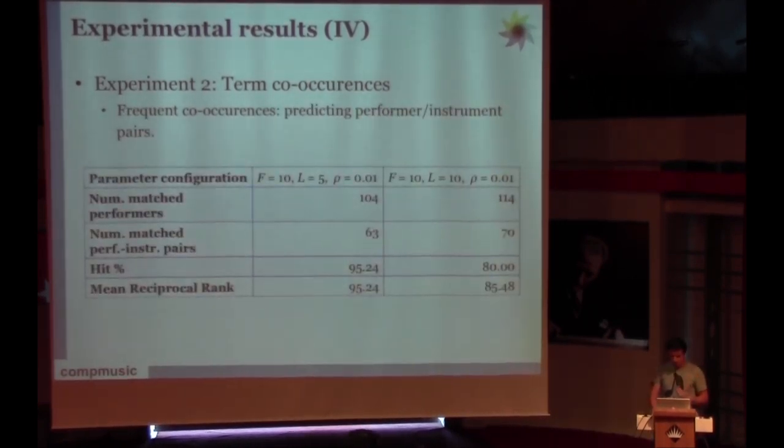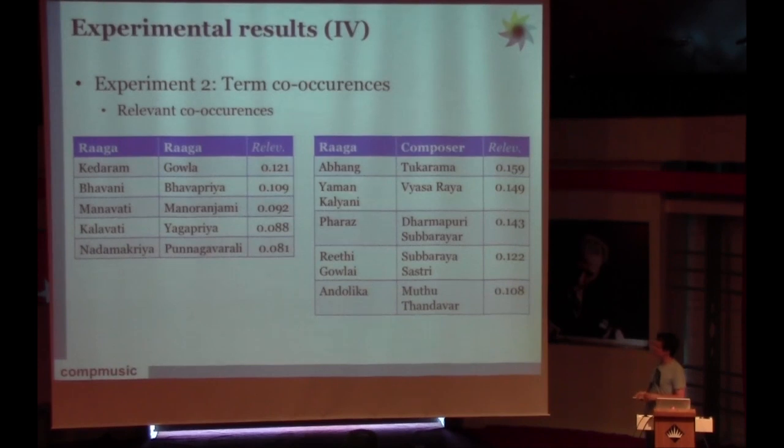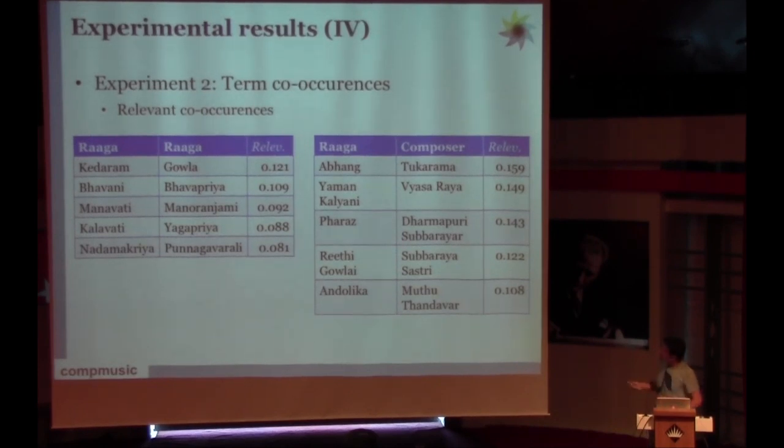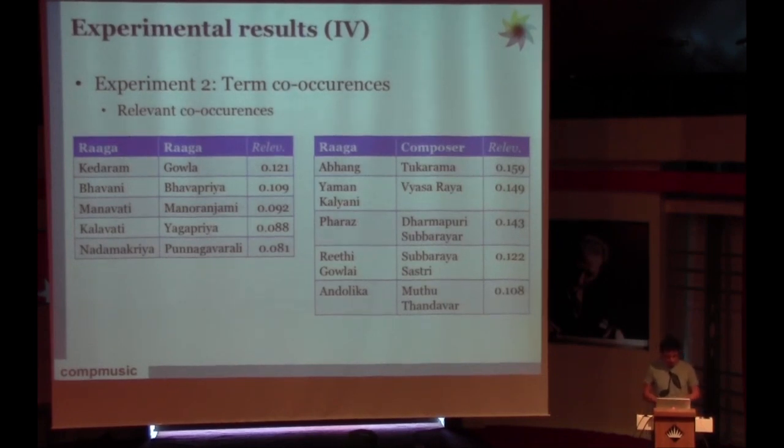This was about frequent concurrences, but what about relevant concurrences? Many edges are not always, if the edge has a high weight, it doesn't mean that it's relevant to the network. We have to compare it to other edges in the network. Basically, this is relevant concurrences between different ragas and raga-composer pairs.